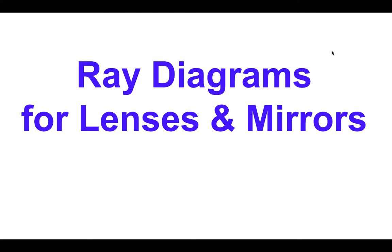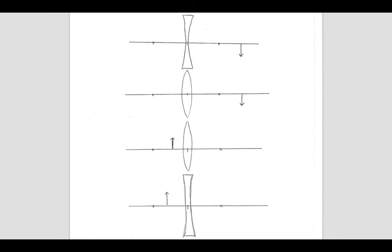We're going to take a quick look at drawing ray diagrams for lenses and mirrors. Here are all the possibilities when you have a single lens: objects that are outside the focal length of a concave and convex lens, and objects that are inside the focal length of a convex and a concave lens.